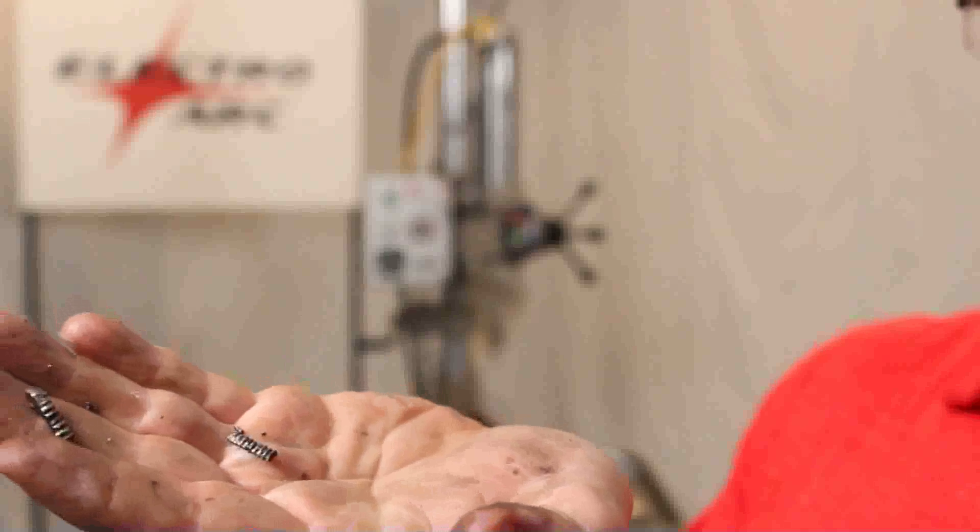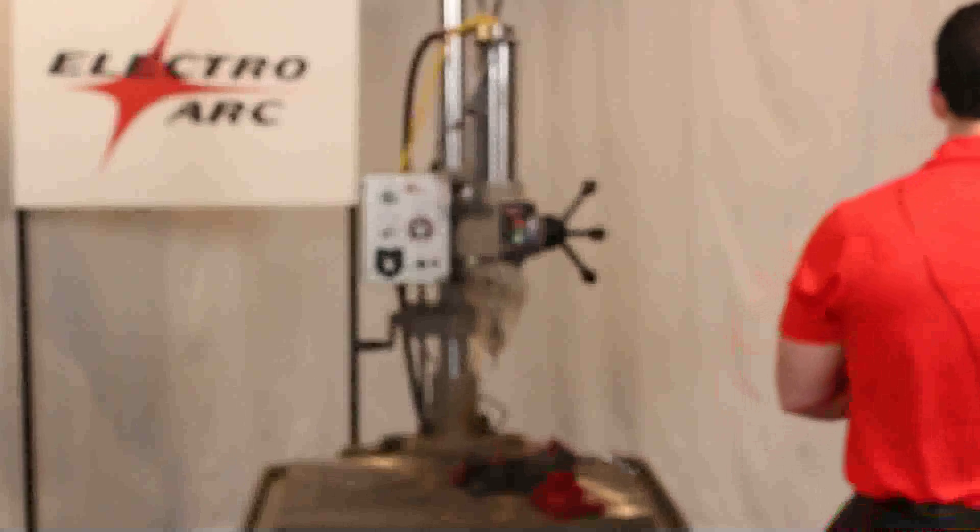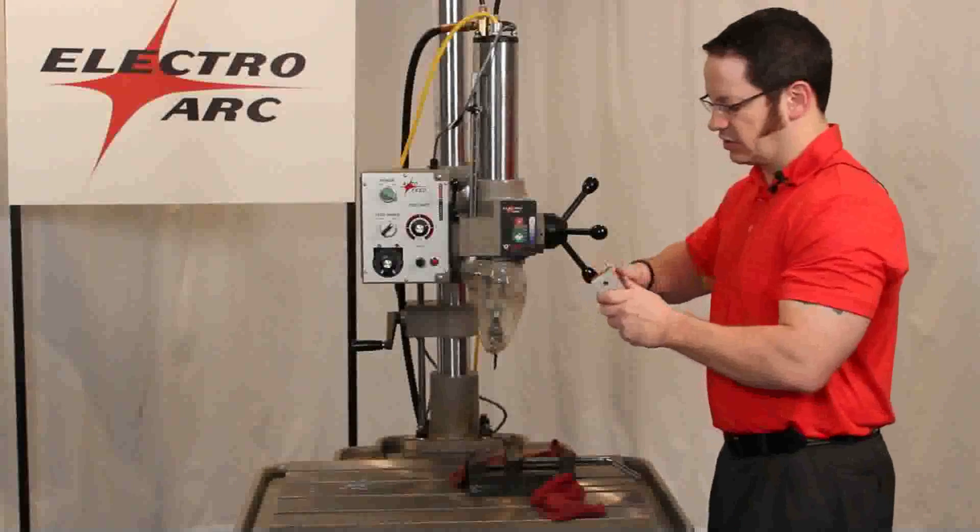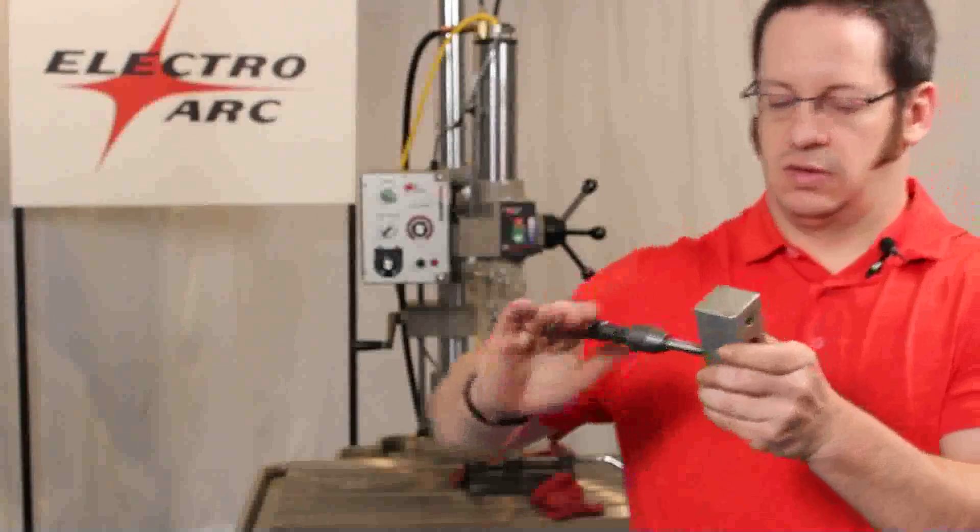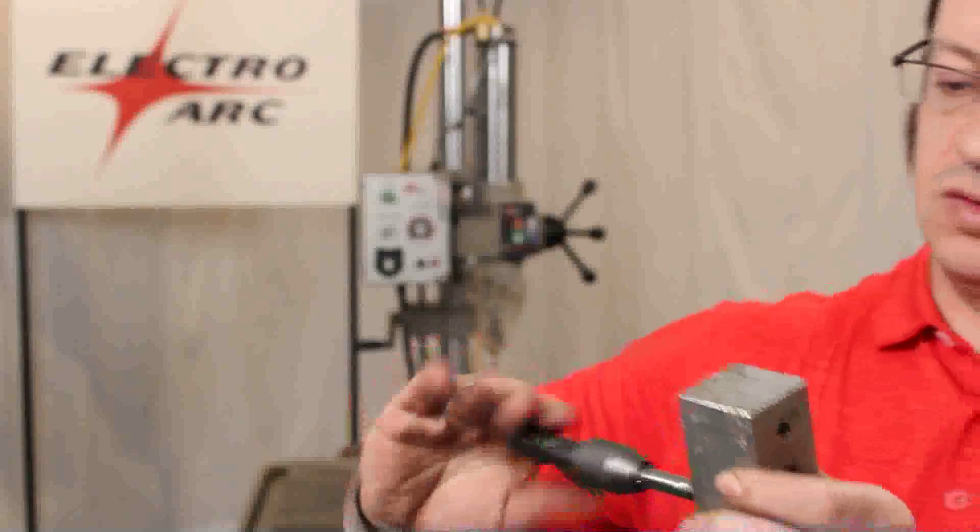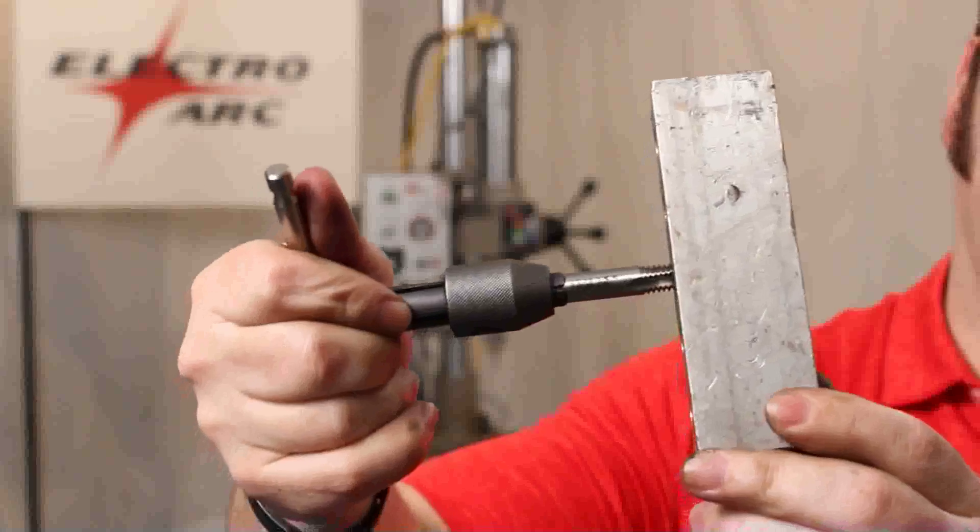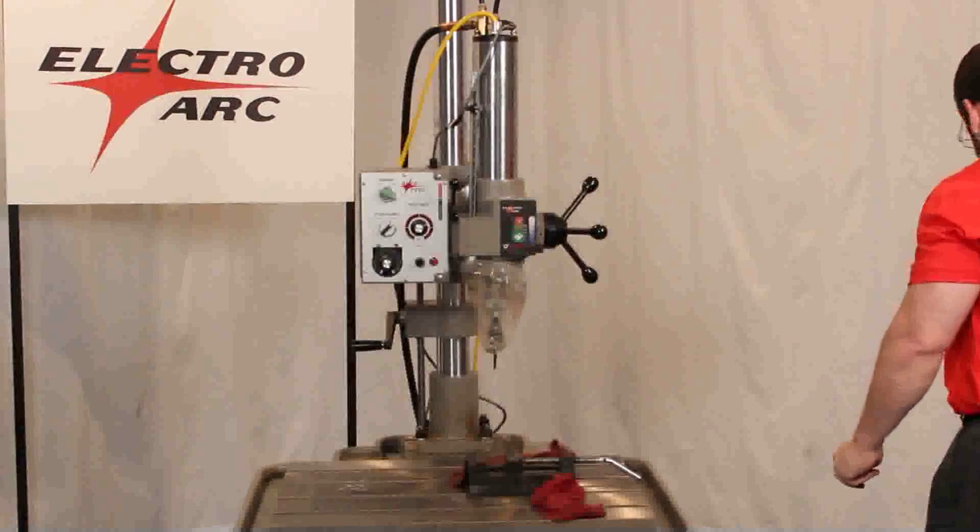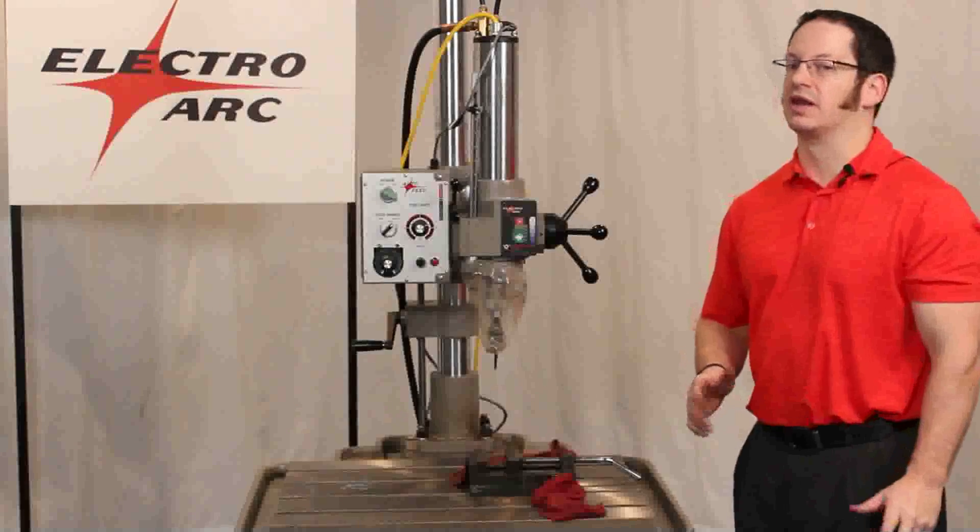Here are those flutes. You can see the threads are intact. Now, like I said, we will just run a new tap through just to clean out the little bit of debris that's left during the disintegration process. Now that that's cleaned out, it's ready to go back to work for you. In just that short amount of time, we were able to completely remove a 3/8 tap about an inch deep from that material.